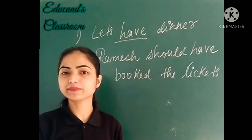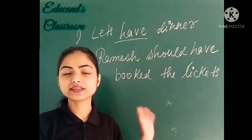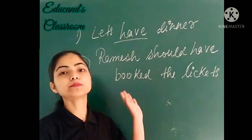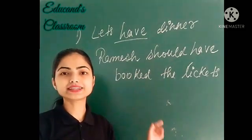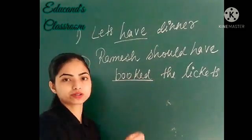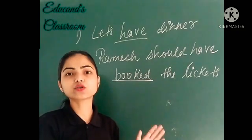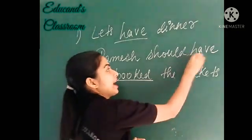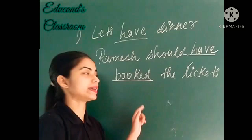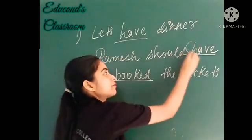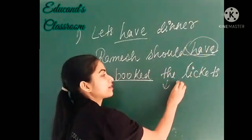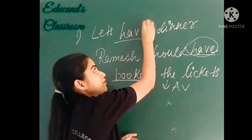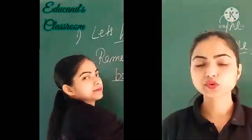Have hooga yaha peh main verb, yaha action verb. Second case mein: 'Raman should have booked the tickets.' Toh second case mein jho main verb hai woh hai 'booked.' Lekin jho main verb ko accompany kar raha hai woh hai 'have.' Isi liye second case mein 'have' work kar raha hai as an auxiliary verb. Lekin first case mein 'have' is working as a main verb. Toh yeh hooga difference between auxiliary verb or action verb.